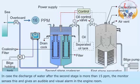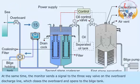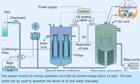Oil content of the final discharge is below 15 ppm. In case the discharge of water after the second stage is more than 15 ppm, the monitor senses this and gives an audible and visual alarm in the engine room. At the same time, the monitor sends a signal to the three-way valve on the overboard discharge line, which closes the overboard and opens to the bilge tank. The sensor reverts to normal operation once the oil content drops below 15 ppm.